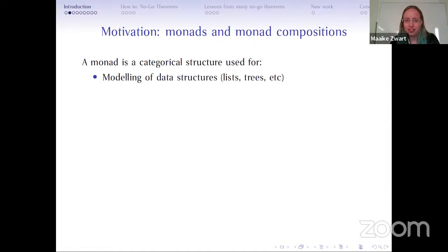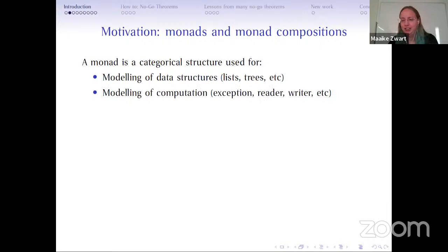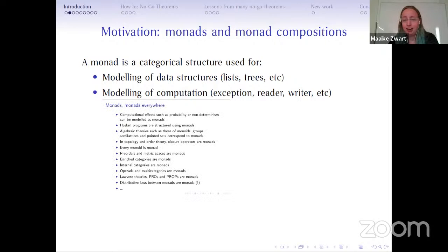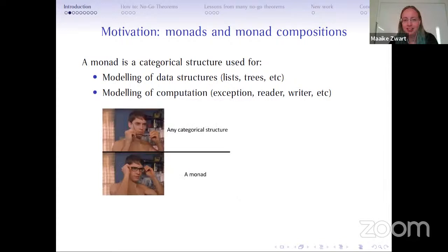To start: monads and monad compositions. Monads are really nice categorical structures used in functional programming and many programming languages to model data structures — things like lists and trees — and to model computational effects like exceptions, reader, writer, and state. All of that is monads. Once you know what a monad is, you start seeing them everywhere. Whatever categorical structure you look at, it might be a monad.